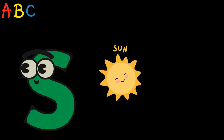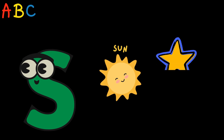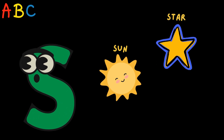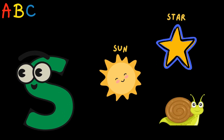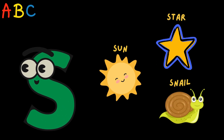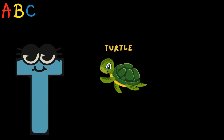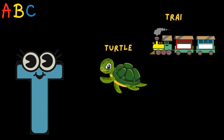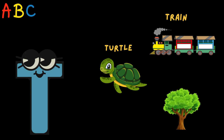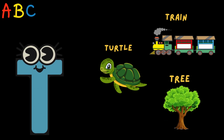S is for Sun, Star, Snail. T is for Turtle, Train, Tree.